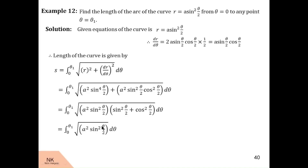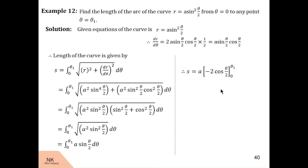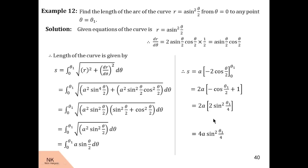So we have the integral of under root a square into sin square theta by 2 d theta, which can be written as the integral of a sin theta by 2 d theta. A is constant, so integral of sin theta by 2 is minus cos theta by 2 upon half, that is minus 2 cos theta by 2. Substituting the limits, we get minus 2a into cos of theta 1 by 2 minus cos 0 which is 1. Using the identity 1 minus cos alpha equal to 2 sin square alpha by 2, we can write 1 minus cos theta 1 by 2 as 2 sin square theta 1 by 4. Finally, we get 4a sin square theta 1 by 4. This is the length of the given curve from theta equal to 0 to theta equal to theta 1.